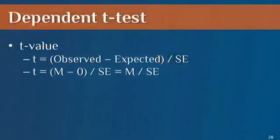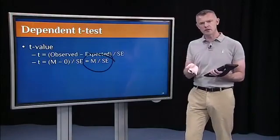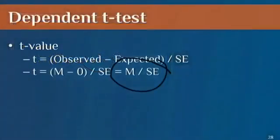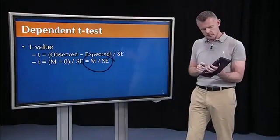To review, the t-value is just an observed minus an expected over standard error. The observed is just the mean difference score. We calculate a difference score for every individual and then average them. That's the mean difference score. What's the expected value? Well, we're playing the game of NHST. So the expected value is zero. So t is real simple. It's just the mean difference score over the standard error of the mean difference score. What did you observe relative to what would you expect just due to chance? That's it. Real simple.